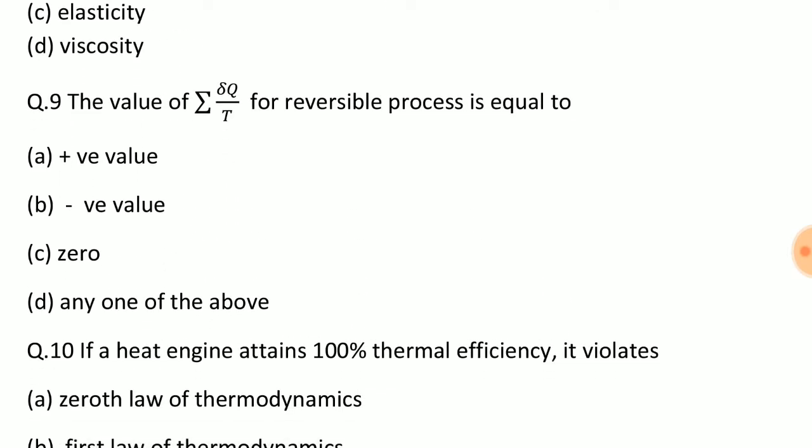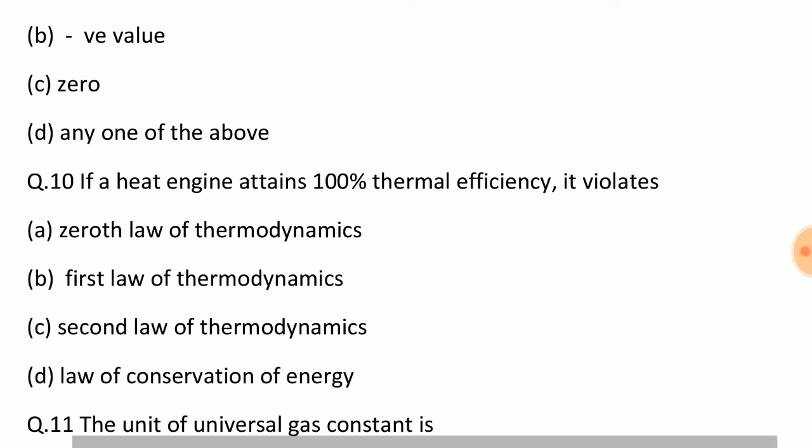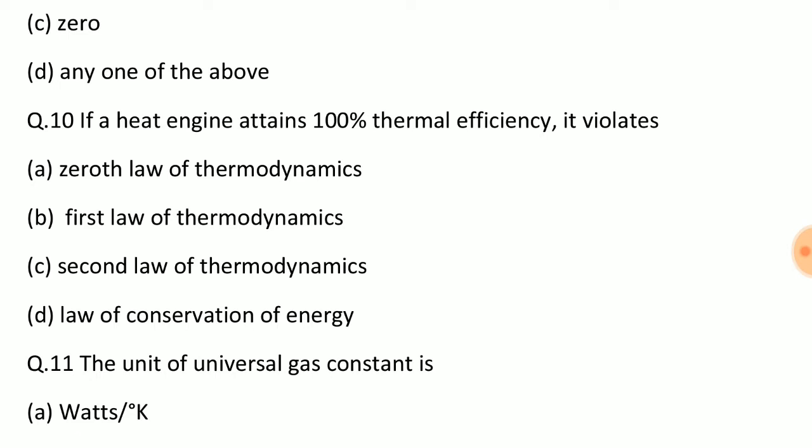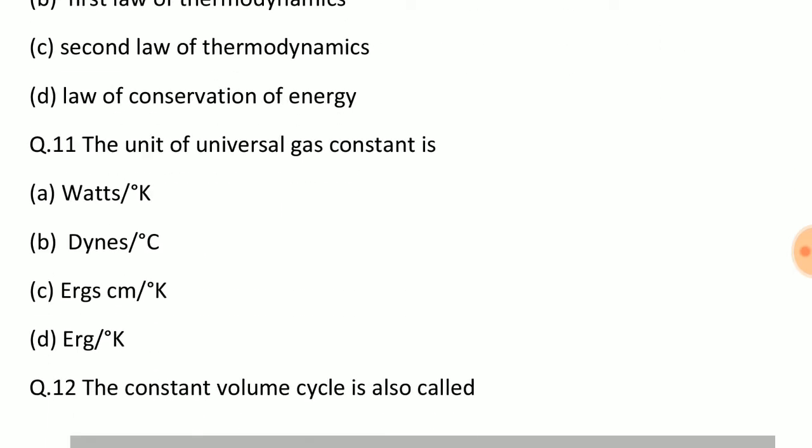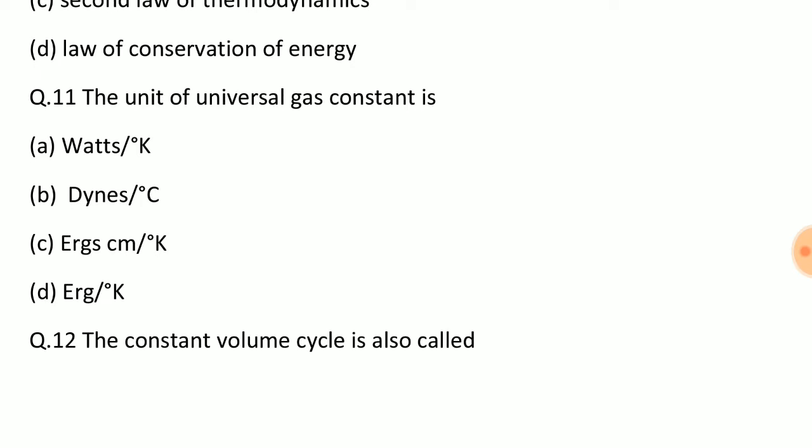Question: Froude number is the ratio of inertial force to? Answer: Option A, gravitation force. Question: The value of summation del Q upon T for reversible process is equal to? Answer: Option C, 0. Question: If a heat engine attains 100% thermal efficiency, it violates? Answer: Option C, second law of thermodynamics.